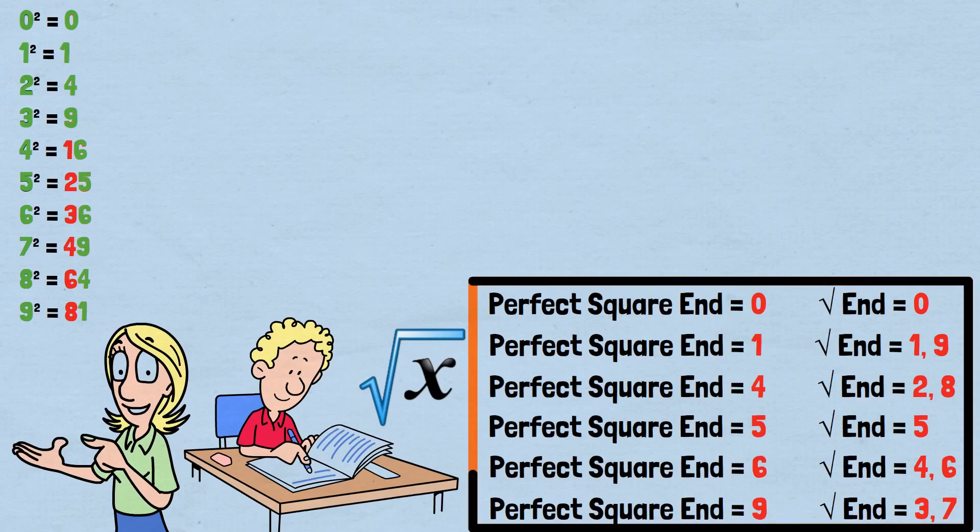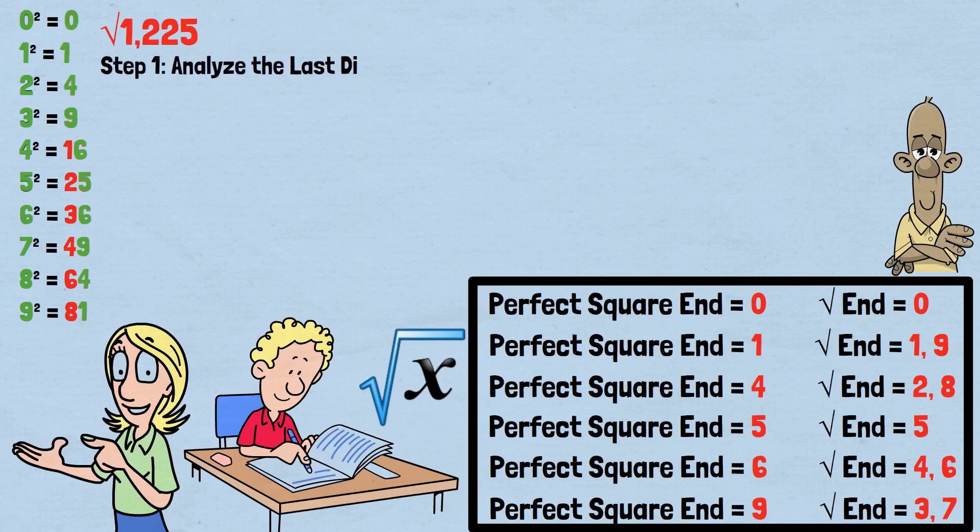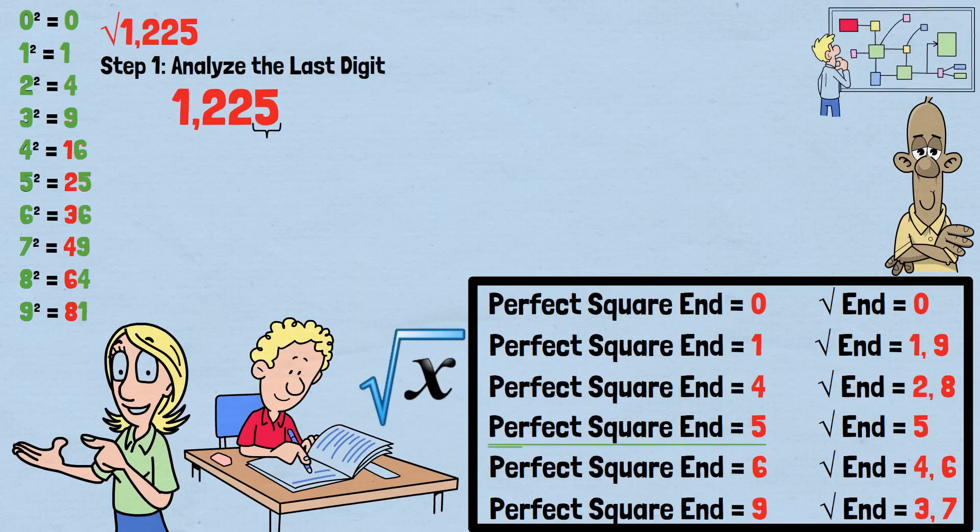Now that we've established the foundation, let's walk through the complete method using a concrete example: the square root of 1,225. Step 1: Analyze the last digit. Our number is 1,225. The last digit is 5. According to our pattern, if a perfect square ends in 5, its square root must also end in 5. This gives us immediately half of our answer. The last digit is 5.